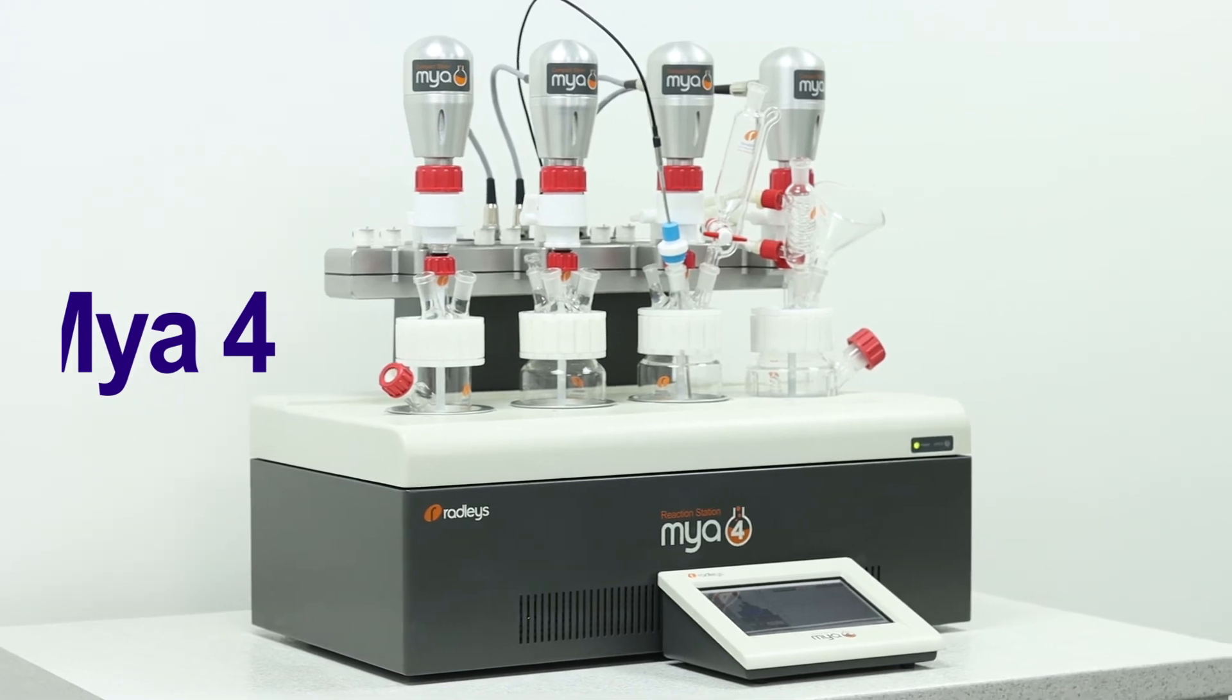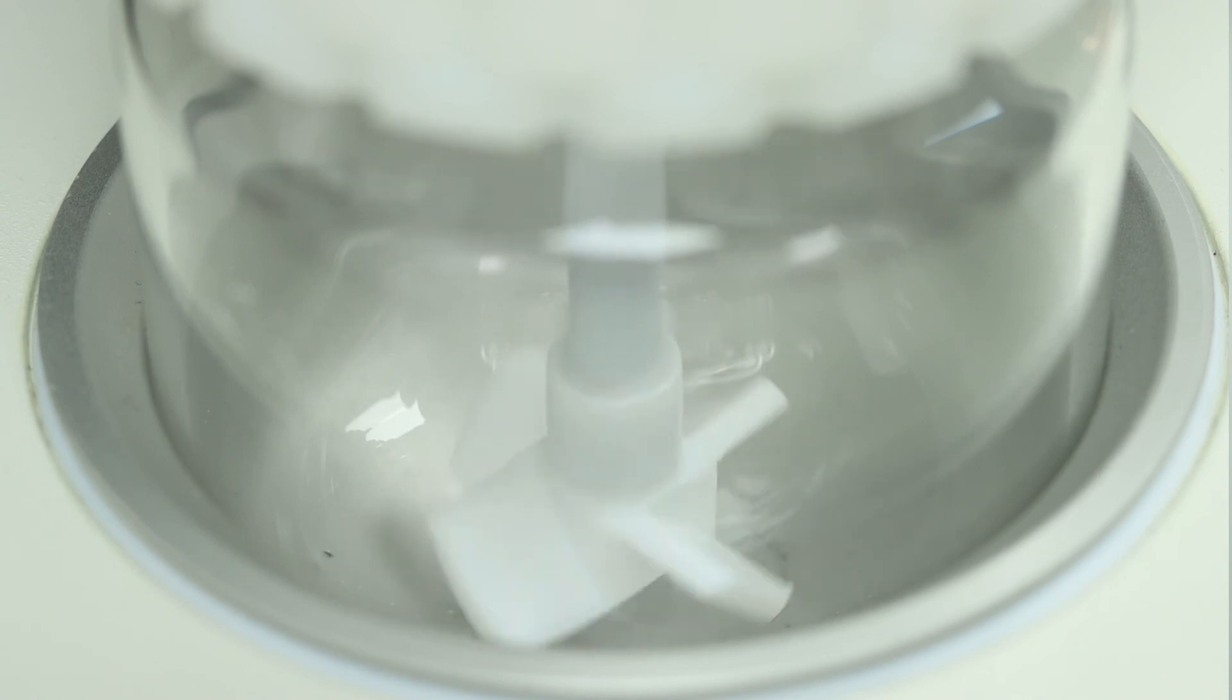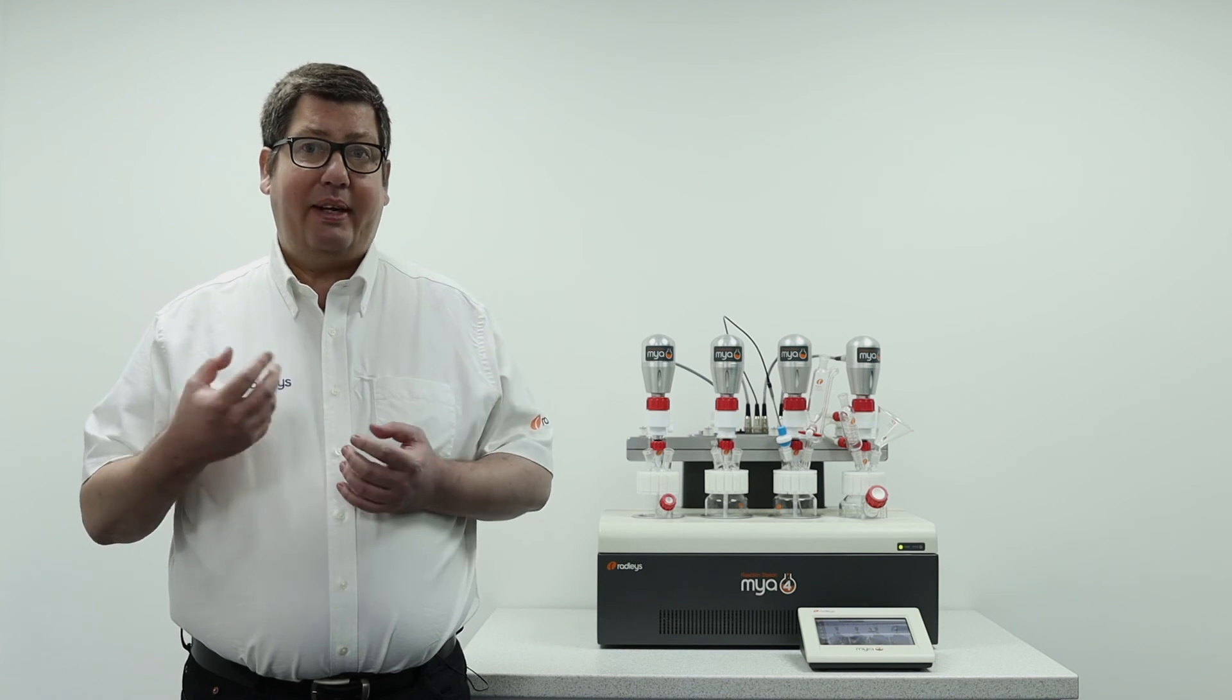Apparatus such as the Meyer 4 reaction station allows the chemist to work in parallel with active heating and cooling with sample volumes of 200 ml or less and independently controlled overhead stirring. The development lab can therefore closely mimic what is happening in a manufacturing process.